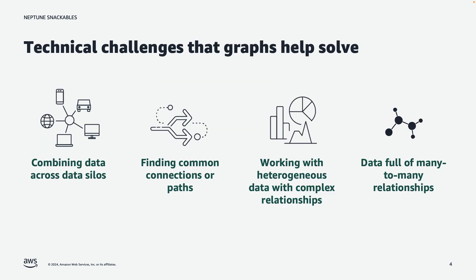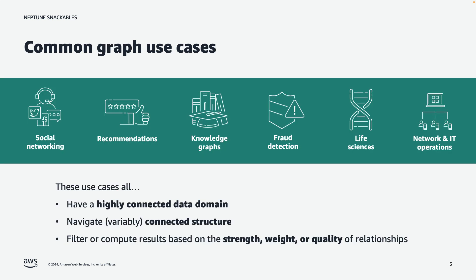From those building blocks, you can overcome some important technical challenges. You can combine data across silos, find connections or paths through complex data, and work with heterogeneous data that has complex relationships — including data full of many-to-many relationships. You can build important use cases: social networking, recommendations, knowledge graphs, fraud detection, life sciences, and network and IT operations, among many others — all on a graph database. What these use cases share is a highly connected data set, where you can navigate structure and follow relationships based on strength of relationship.